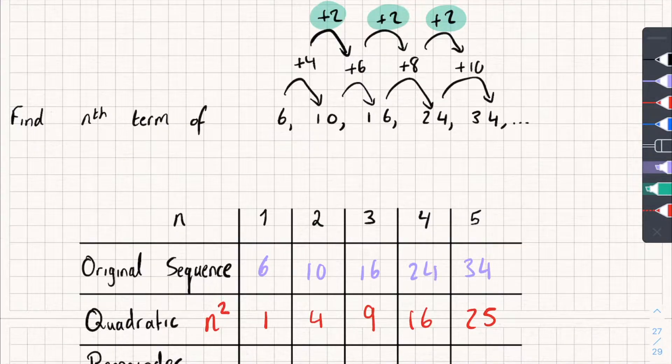Now, this last box, remainder, to work this out, we are literally finding the remainder when we take our original sequence, and we subtract whatever the quadratic one is. So, for the first box, I'm going to do 6 subtract 1, which is 5. Then, I'm going to do 10 subtract 4, which is 6. I'll fill in the rest of these now.